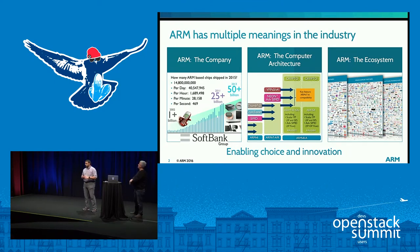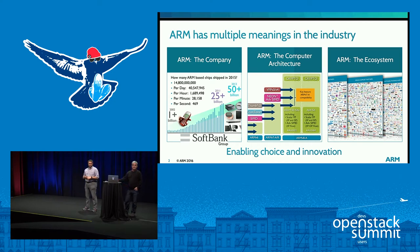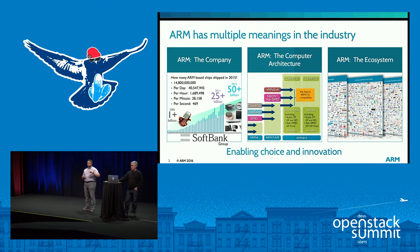ARM gets used as a term for multiple things. We're essentially a company — as of last month, we were acquired by SoftBank. ARM is also an architecture, an instruction set. And then ARM is an ecosystem as well. How we come to market as a company, we deliver intellectual property to companies who develop chips, boards, etc. It's really important that we operate in an ecosystem and partnership way because that's how we're successful, through our partners.